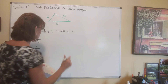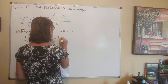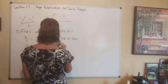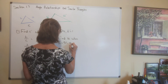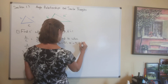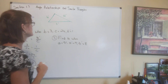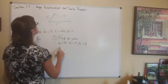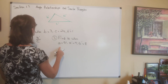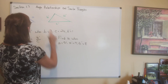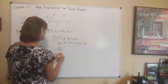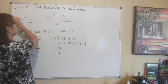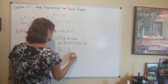Number 2 says find B when A is 51, A prime is 17, and B prime is 8. We could write the proportion: A is to A prime as B is to B prime. That would be 51 is to 17 as B is to 8.